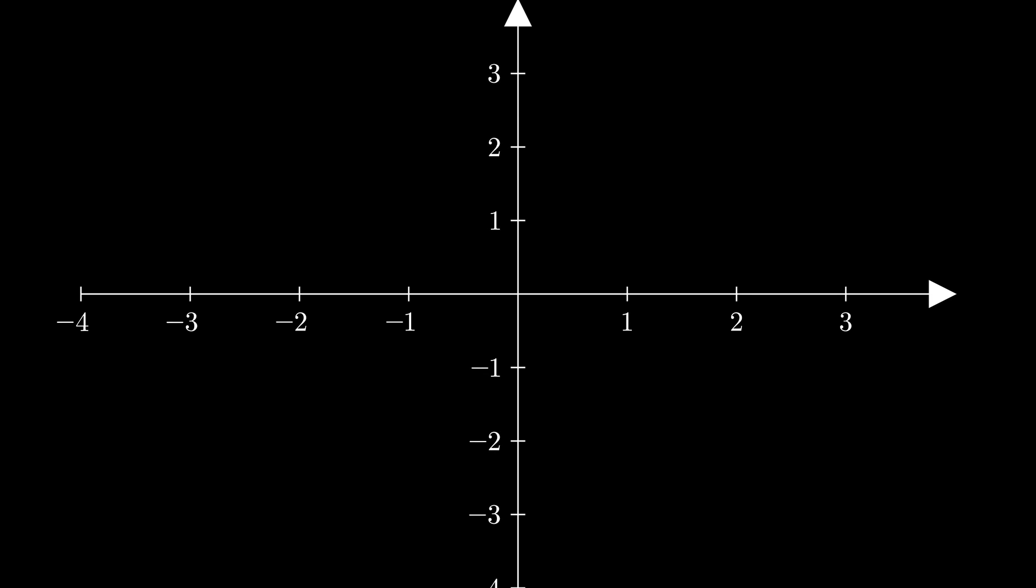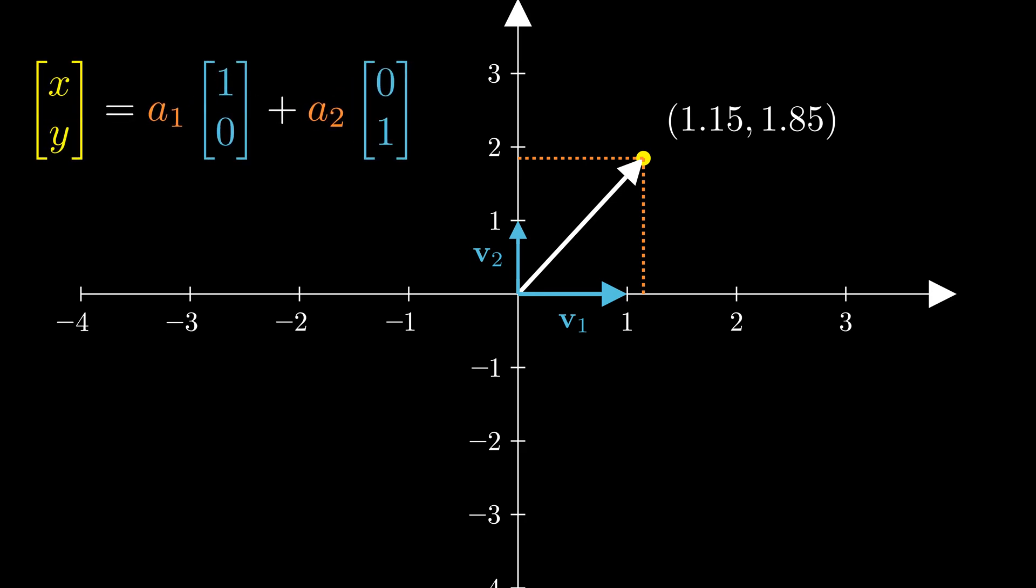Let's start with a 2D example. We know that any point on this plane can be described by just two numbers. Formally, we expressed the 2D vector p as the linear combination of basis vectors. The basis vector v1 and v2 are just unit vectors for the x and y-axis.